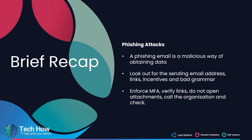So after this video, we've learned that a phishing email is a malicious way of obtaining data, what to look out for in sending email addresses, what links may look like, what incentives may be involved, and how to check for bad grammar. To protect yourself: enforce multi-factor authentication, verify links, don't open attachments, and call the organization to check. If you have any queries or suspicious emails, don't hesitate to get in touch and we'll check it out for you. Thank you very much for your time.